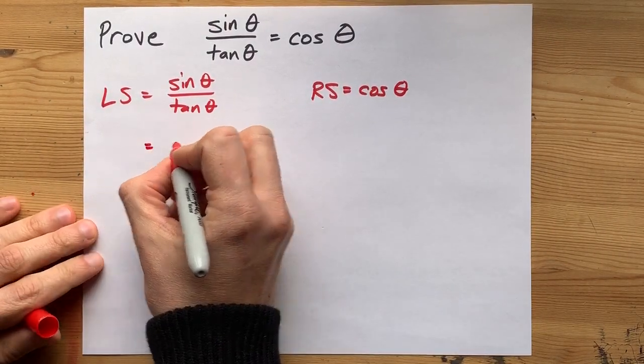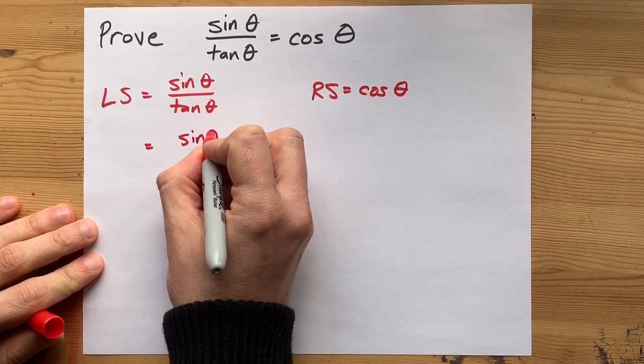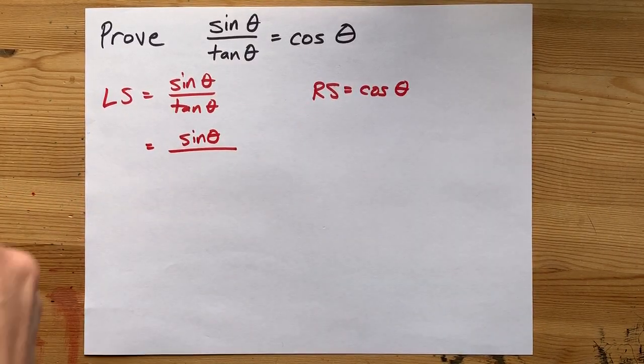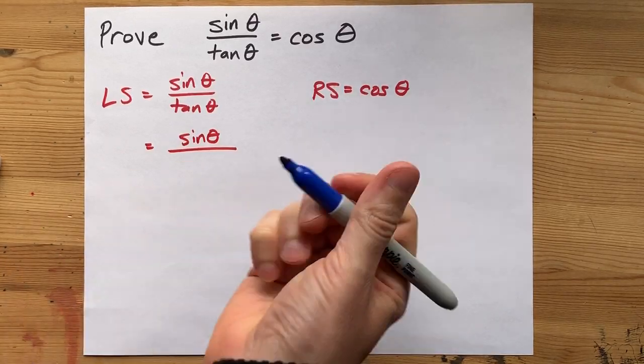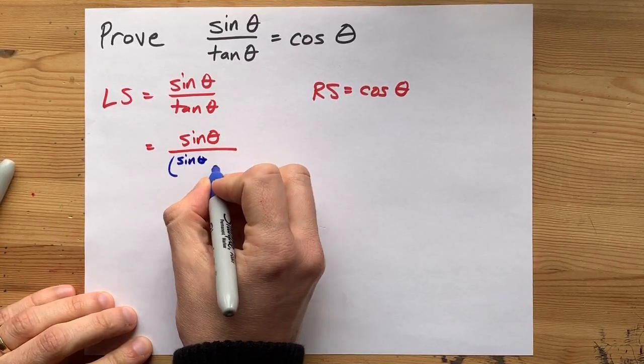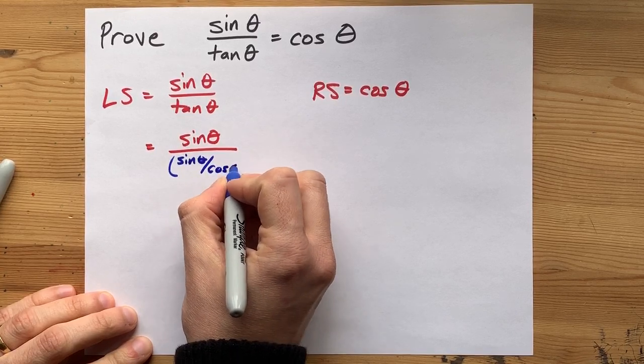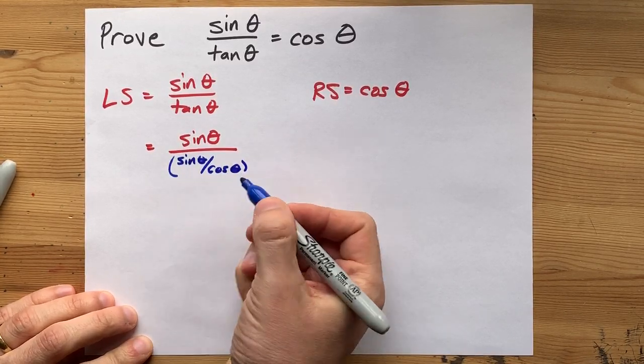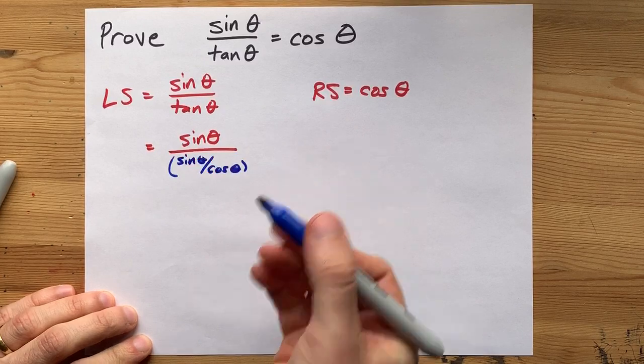It's called the quotient identity. And so what I'm doing here is sine theta divided by tan theta, but I'm going to rewrite it in a clever way: sine theta over cos theta. This is always equal to tan theta for every angle.